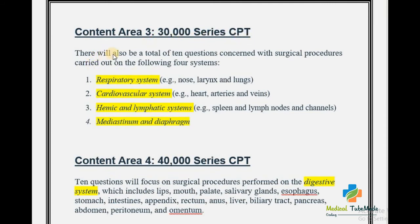Content Area 3 covers the 30,000 series of the CPT book. You can expect 10 questions concerned with surgical procedures carried out on four systems: the respiratory system, cardiovascular system, hemic and lymphatic system, and the mediastinum and diaphragm. Be careful while assigning 30,000 series CPT codes because they have many guidelines. Prepare well for this 30,000 series.